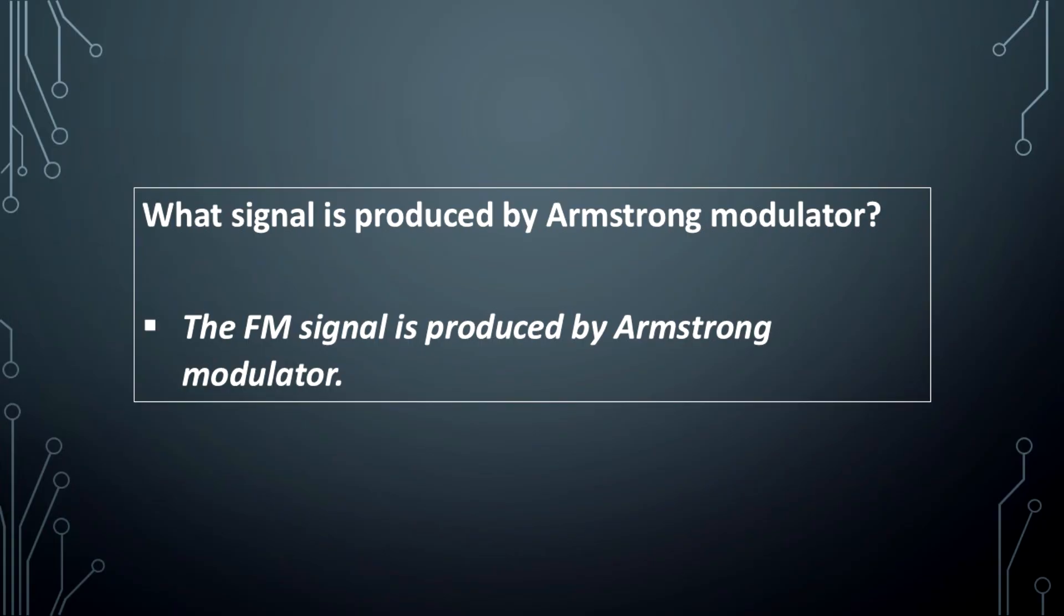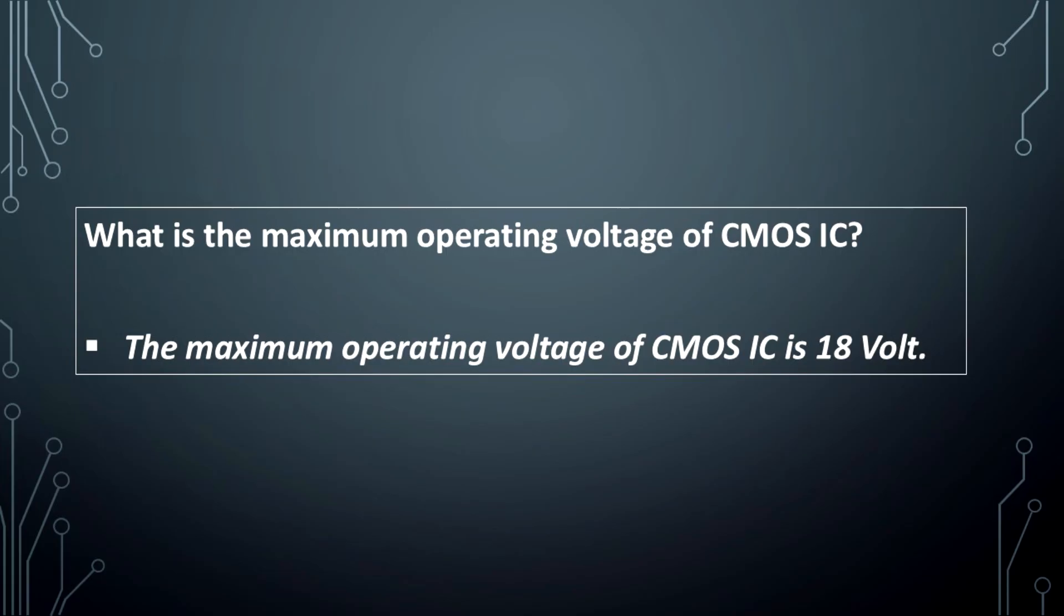What is the PN-PN diode? The PN-PN diode is the unilateral diode. What signal is produced by Armstrong modulator? The FM signal is produced by Armstrong modulator. What is the maximum operating voltage of CMOS IC? The maximum operating voltage of CMOS IC is 18 volts.